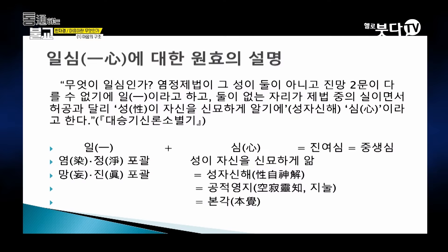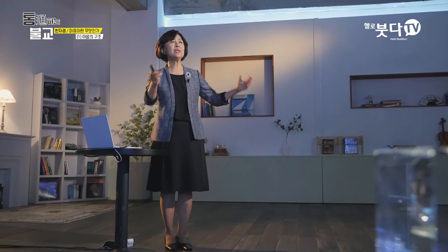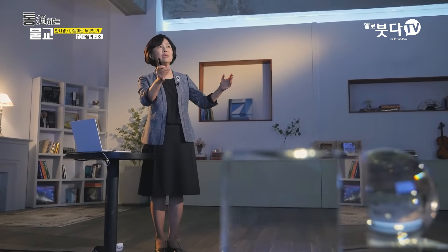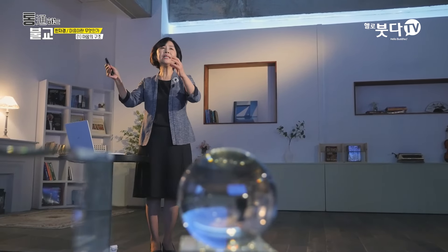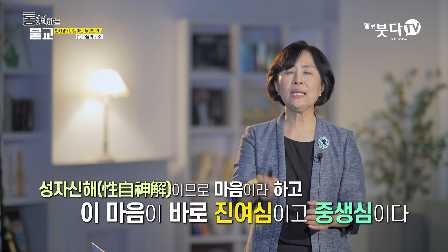원효가 이야기하는 것입니다. 대승기신론소에서 하는 이야기죠. '무엇이 일심인가? 염정(染淨) 제법이 그 성이 둘이 아니고 진망(眞妄) 이문이 다를 수 없기에 일(一)이라고 하고, 둘이 없는 자리가 제법 중에 실이면서 허공과 달리 성이 자신을 신묘하게 알기에 심이라고 한다.' 그러니까 일은 염정을 다 포괄하고 진망을 다 포괄하니까 전체가 되는 거죠. 이 전체의 하나가 무슨 물질이나 추상적 공간이 아니라 그 일이 그 자신을 신묘하게 알기에 마음이라고 한다. 그래서 일심이 되는 것이죠. 이게 바로 진여심이고 중생심이다라고 말할 수 있는 것이죠.